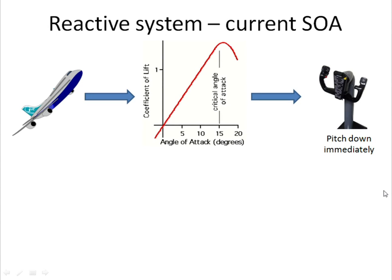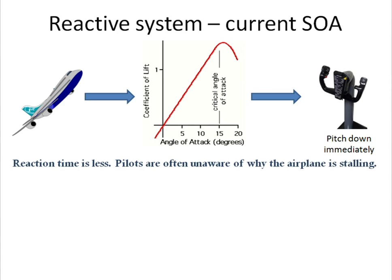So what happens during a stall? The angle of attack is sensed and the stall warning is given. However, this is reactive, meaning an alert is generated after the fact. Although such systems alert when the airplane is about to stall, they rarely give insights about why the airplane is stalling and what the crew should be doing to prevent the stall.